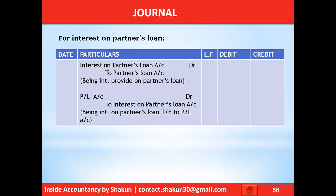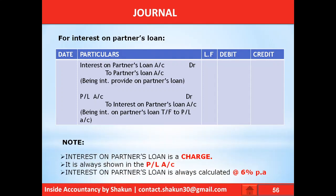Since interest on partner's loan is a charge, not an appropriation, a charge is an item which is provided in case of profits as well as in case of losses. Therefore, interest on partner's loan is transferred to the profit and loss account on the DR side. Please always remember: it is shown in the profit and loss account, not the profit and loss appropriation account, and it is always calculated at the rate of 6% per annum.